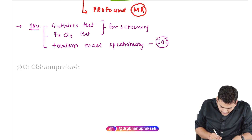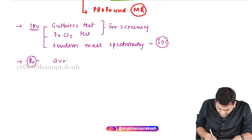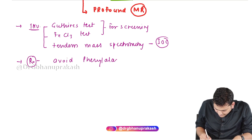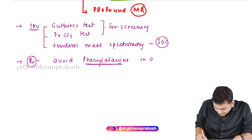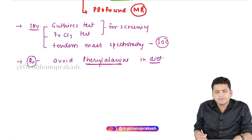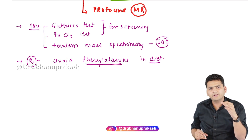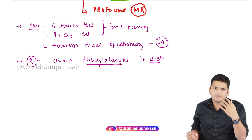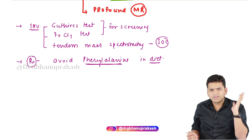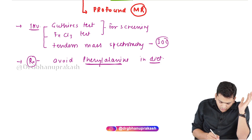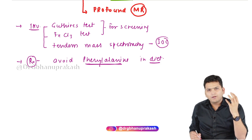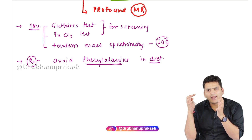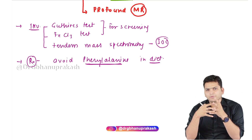For treatment, we need to avoid phenylalanine in the diet. The child must be supplemented with a phenylalanine-free diet. Such supplements are available in the market without phenylalanine. This covers phenylalanine metabolism and the clinical manifestation of phenylketonuria.